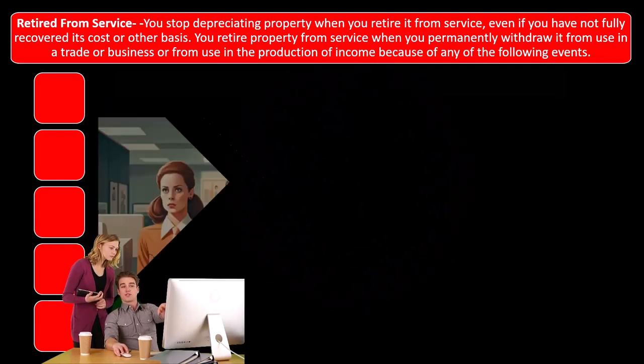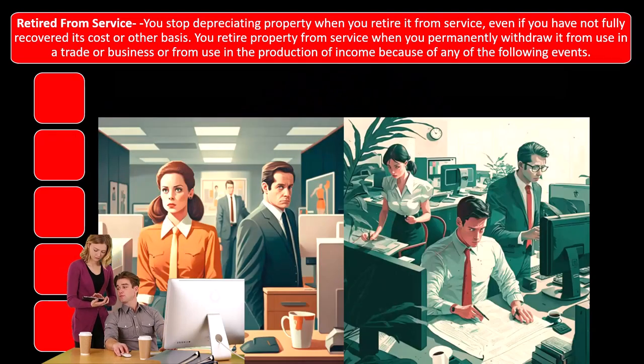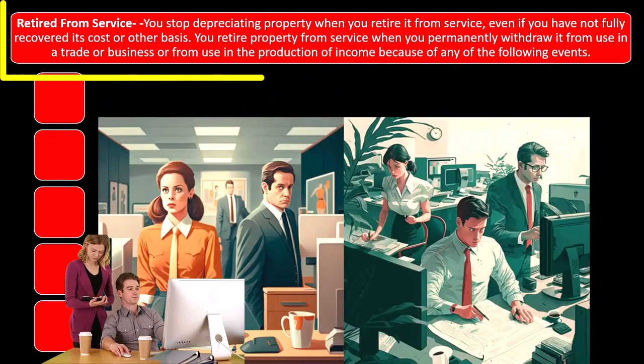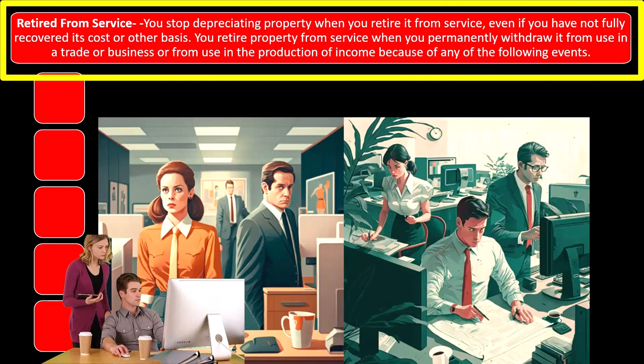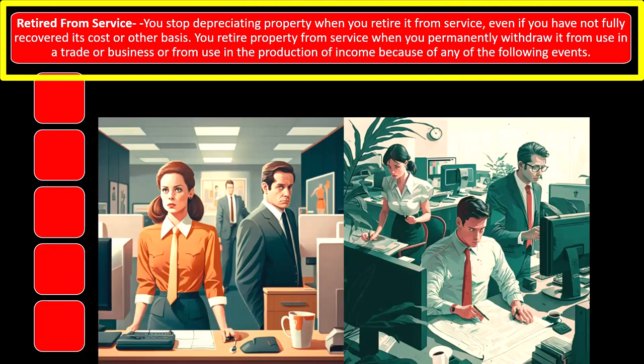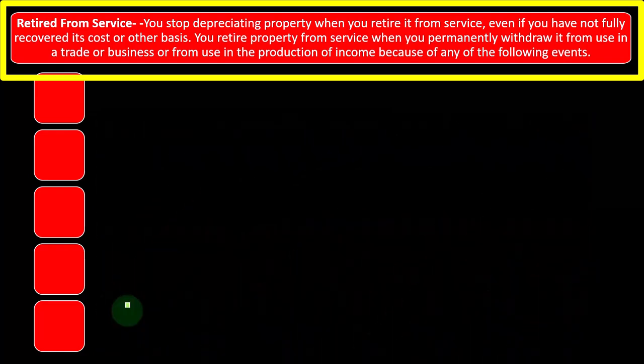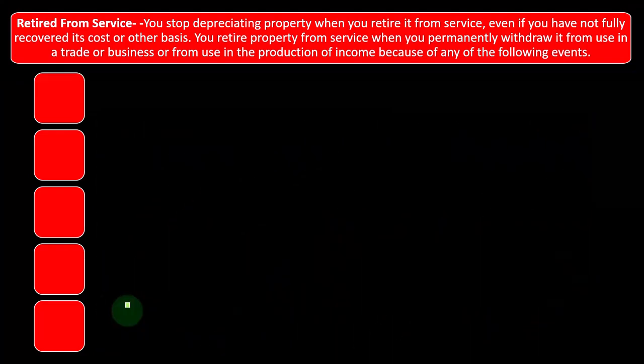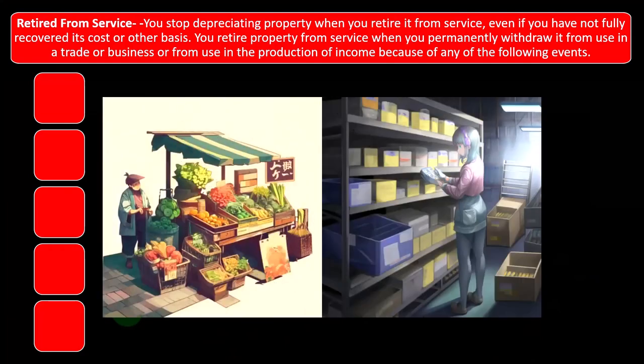Retired from service. You can stop depreciating property when you retire it from service, even if you have not fully recovered its cost or other basis. You retire property from service when you permanently withdraw it from use in a trade or business or from use in the production of income because of any of the following events.